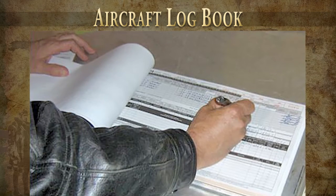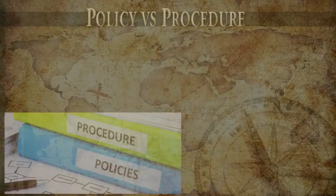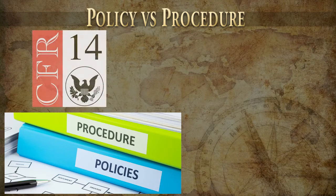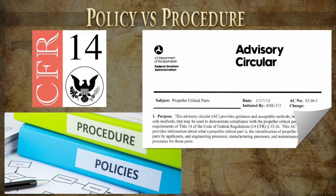One of the issues we often find with written manuals is there's more policy than procedures. There is a distinct difference. The CFRs state policy since we — the regulator — don't tell the certificate holder how to comply, but only that they must comply. Advisory circulars and other FAA guidance provide information on best practices for regulatory compliance.